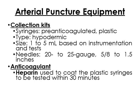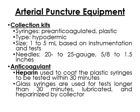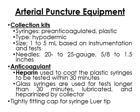Glass syringes are used for tests longer than 30 minutes, lubricated and heparinized by the collector. There should also be a tightly fitting cap for syringes at the lower tip. Why? Because once you test ABG, you should insert the needle into a cork — like the cork used to seal wine. This is because the tests measure oxygen and carbon dioxide, and if those gases escape from the syringe, the results will no longer be accurate.